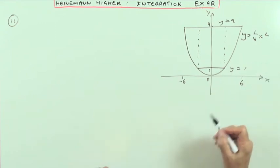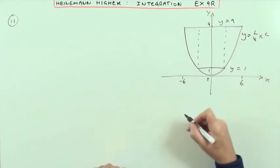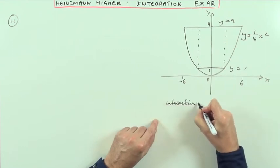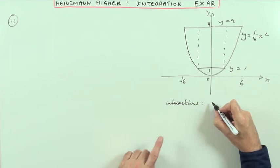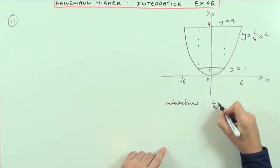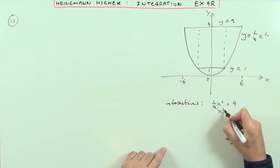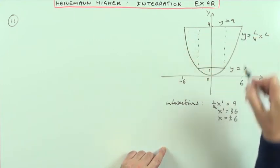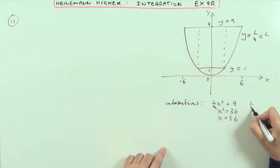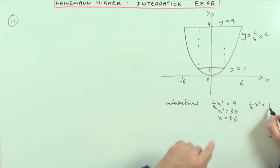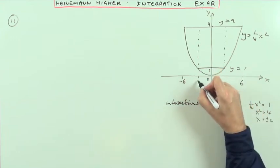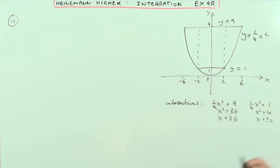The first step is to check the numbers for these intersections. For y equals 9: a quarter x squared equals 9, so x squared is 36, giving x equals plus or minus 6 — confirmed. For y equals 1: a quarter x squared equals 1, so x squared equals 4, giving x equals plus or minus 2. So they're actually crossing at negative 2 and 2.